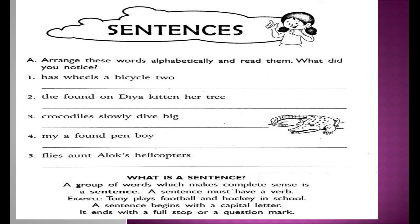Let's move further and look at this group of words. The second one is: 'The found on Diyah kitten her tree.' If we arrange it alphabetically, it becomes 'Diyah found her kitten on the tree.' The third one: 'Crocodiles slowly dive big.' When arranged alphabetically, this group of words will turn into a sentence: 'Big crocodiles dive slowly.' You can pause the video and arrange the fourth and fifth ones. Always remember, a sentence begins with a capital letter and ends with a full stop, a question mark, or an exclamatory mark.